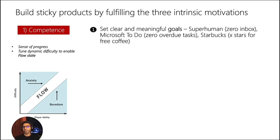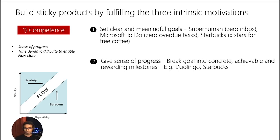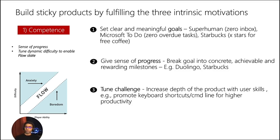Number two: give a sense of progress by breaking down goals into concrete, achievable, and rewarding milestones. Apps that do this really well include Duolingo and Starbucks. Number three: tune challenges — think about increasing difficulty in your product, unlocking new features as users progress. An example is Superhuman, which promotes keyboard shortcuts and command-line use for higher productivity as users grow into the product. Games do this well too — unlocking levels and increasing difficulty with each level.